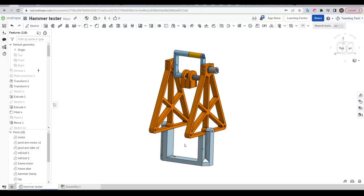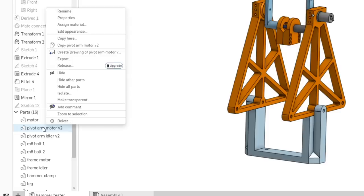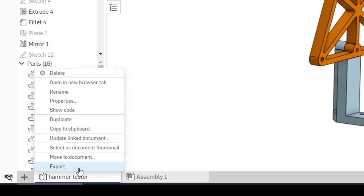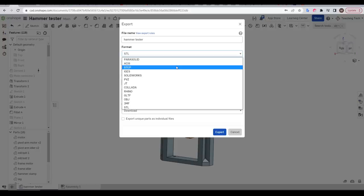If you're not, you can still access this document without signing in, right click on any individual part and select export, and select whatever format suits your CAD best. You can also right click on the hammer tester tab, again click on export, with the difference being that doing it this way will export all of the parts already in their position.